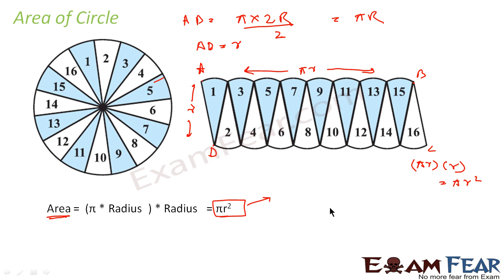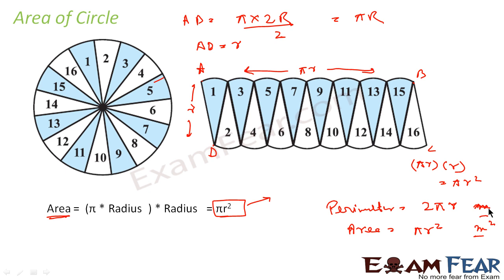Let me repeat — don't get confused. The perimeter of a circle is nothing but 2πr, and the area is nothing but πr². The perimeter will be in meters, and the area will be in meters squared. This is logical: 2πr has only one r, so it is in meters — it is the distance covered in one complete rotation. The area has r², so it is in meters squared. Area is always in square units, and perimeter is always in linear units.